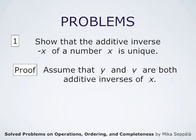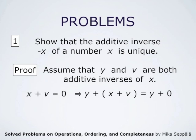Since v is an additive inverse of x, this means that x plus v equals zero. Since x plus v is zero, we may add y to both sides of the equation. We get y plus (x plus v) equals y plus zero. But y plus zero is simply y by the definition of zero. And y plus (x plus v) is the same as (y plus x) plus v, so we get (y plus x) plus v equals y.